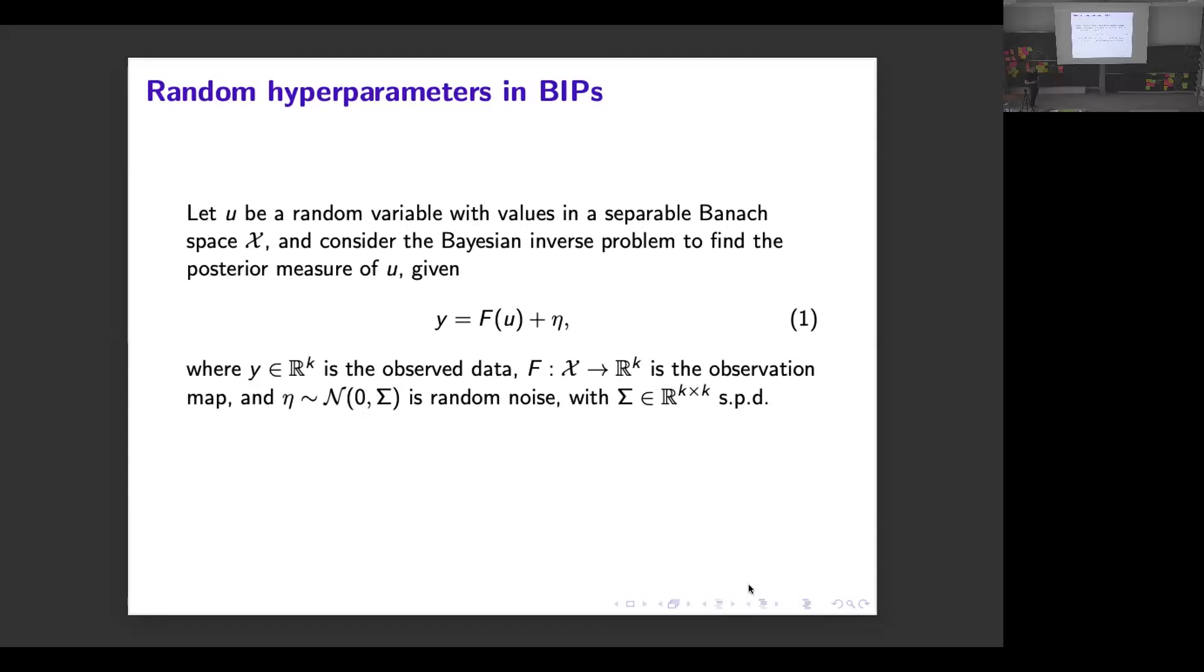So u is a random variable with values in the Banach space and you want to assign a prior model. We repeatedly came to the point to say it's interesting to actually include some random hyperparameters into this prior model. For instance, if you have the standard model where u is a log-Gaussian random field as prior, it would make sense to also model the correlation length as a random variable because you actually do not have a good idea what the correlation length is beforehand, so it would really make sense to include this as a Bayesian parameter.